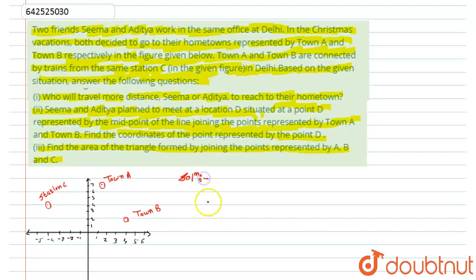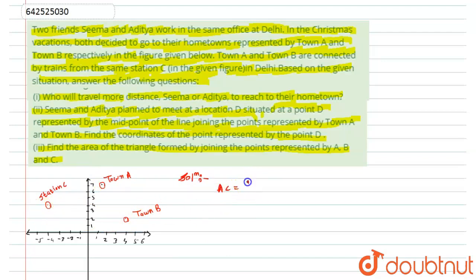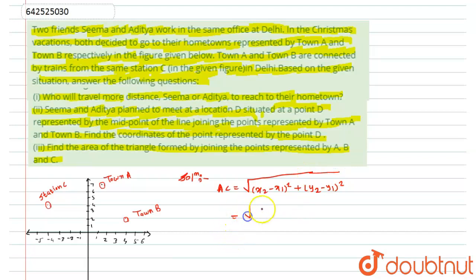The first question asks who travels more distance — Seema or Aditya. Looking at the figure, we have Town A, Town B, and Station C. To find the distances, we use the distance formula: AC equals the square root of (x2 minus x1) squared plus (y2 minus y1) squared.